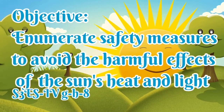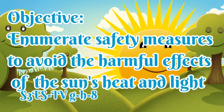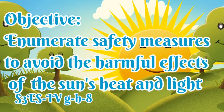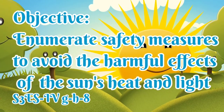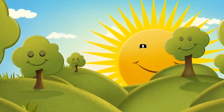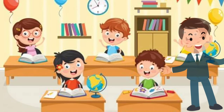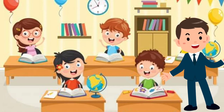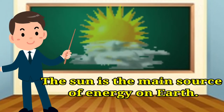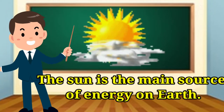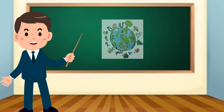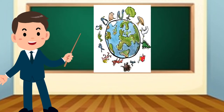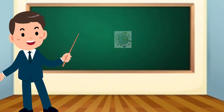In this lesson, we will enumerate safety measures to avoid the harmful effects of the Sun's heat and light. Good day, kids! Welcome to our science class. Did you know that the Sun is the main source of energy on Earth? All living things on Earth depend on heat and light from the Sun.